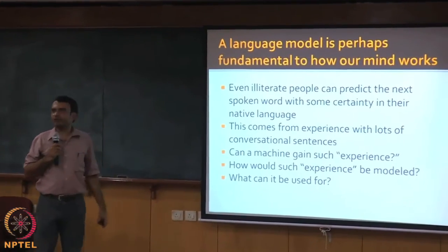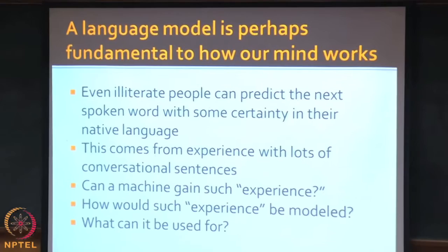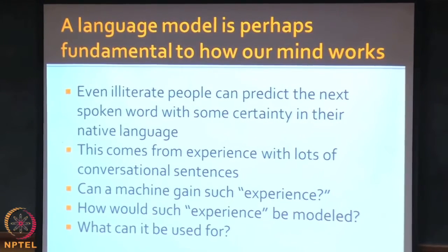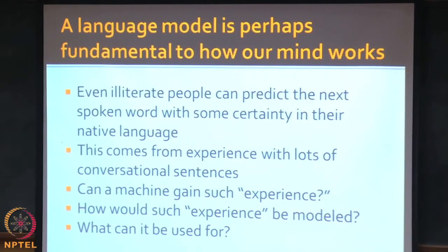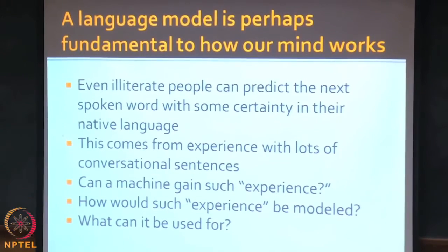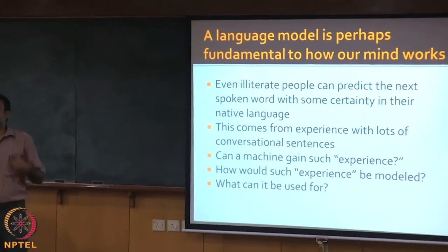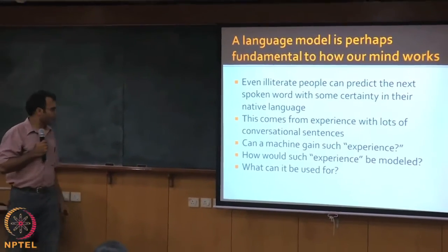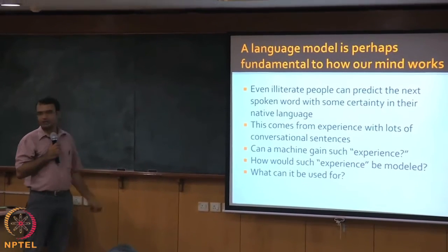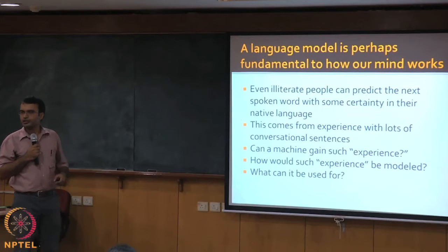Language is fundamental to how our brains work. Even an illiterate person — they don't have to be Panini or Noam Chomsky — when they hear parts of a sentence, they know what is coming next. It's very fundamental to us, and this comes from experience of lots of conversational sentences. Our goal is to find out how the machine can gain such an experience, how that experience will be modeled, and what it will be used for — including spell checking.